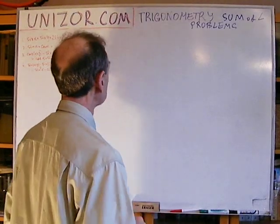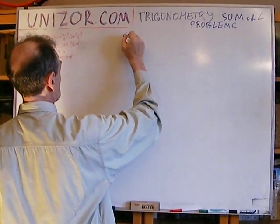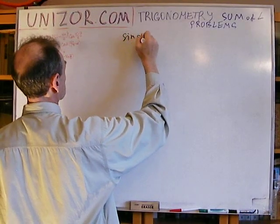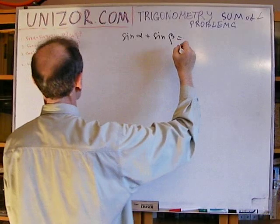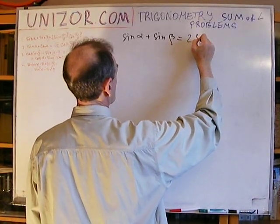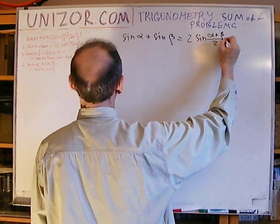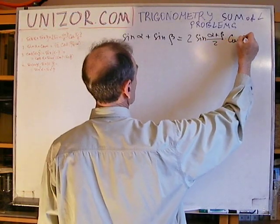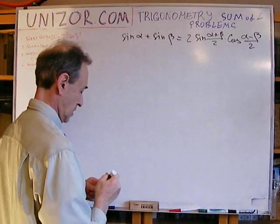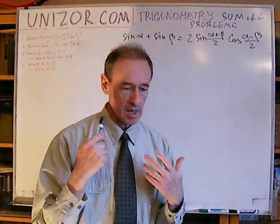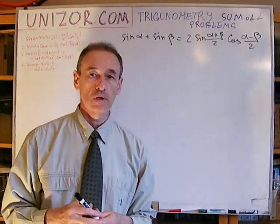Alright, problem number one. Prove that sine of alpha plus sine of beta equals two sine of alpha plus beta over two times cosine of alpha minus beta divided by two. We need some idea about how to prove this particular identity.